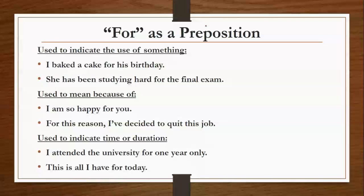For as a preposition. अब मैं आपको बताऊंगी कि 'for' को हम as a preposition किस तरीके से use कर सकते हैं। Used to indicate the use of something — जब भी किसी चीज का purpose होता है, तब हम 'for' का use कर सकते हैं। Examples: 'I baked a cake for his birthday' — मैंने उसके birthday के लिए cake बनाया। 'She has been studying hard for the final exam' — वो final exam के लिए बहुत मेहनत कर रही है। 'For' मतलब होता है किसी चीज के लिए।